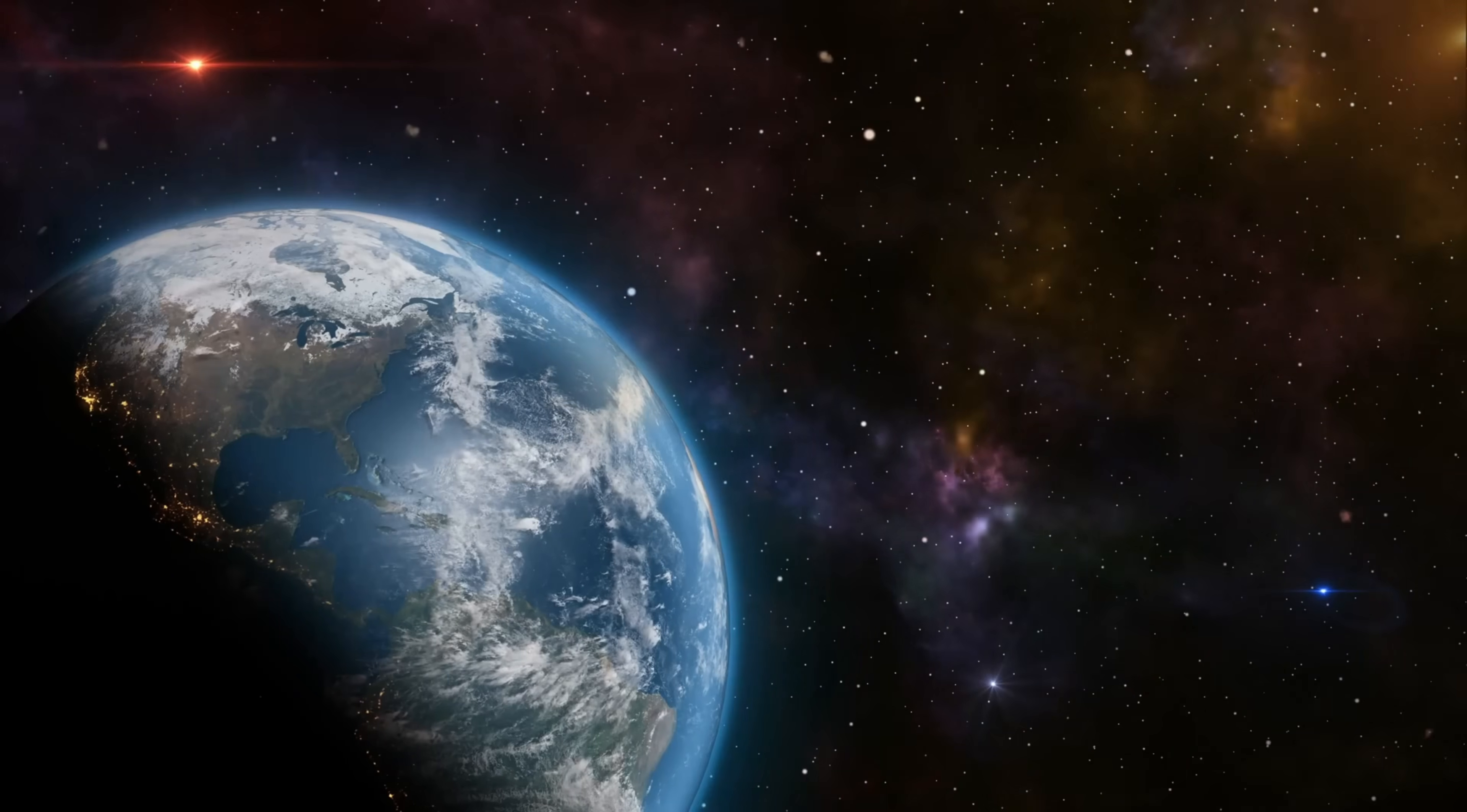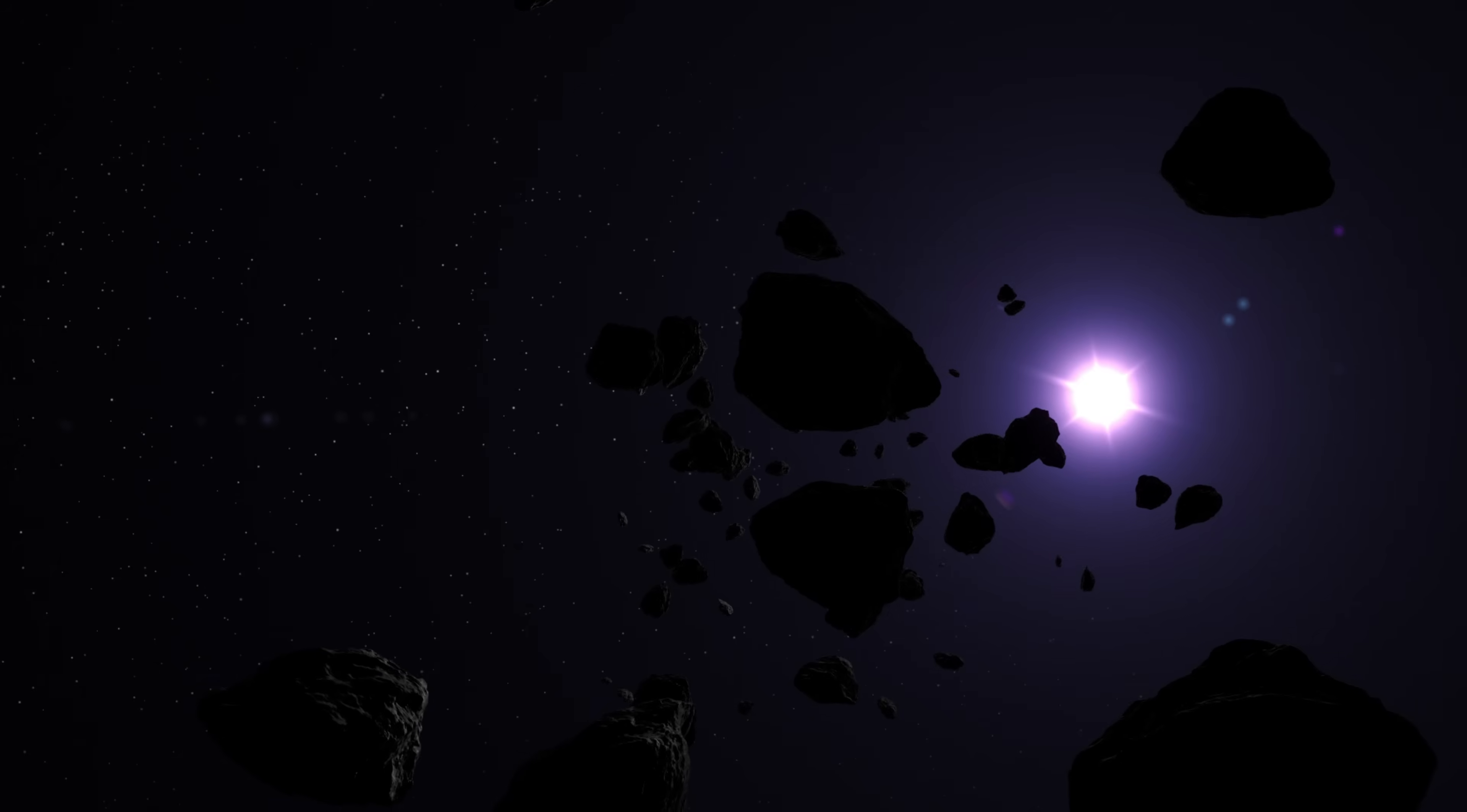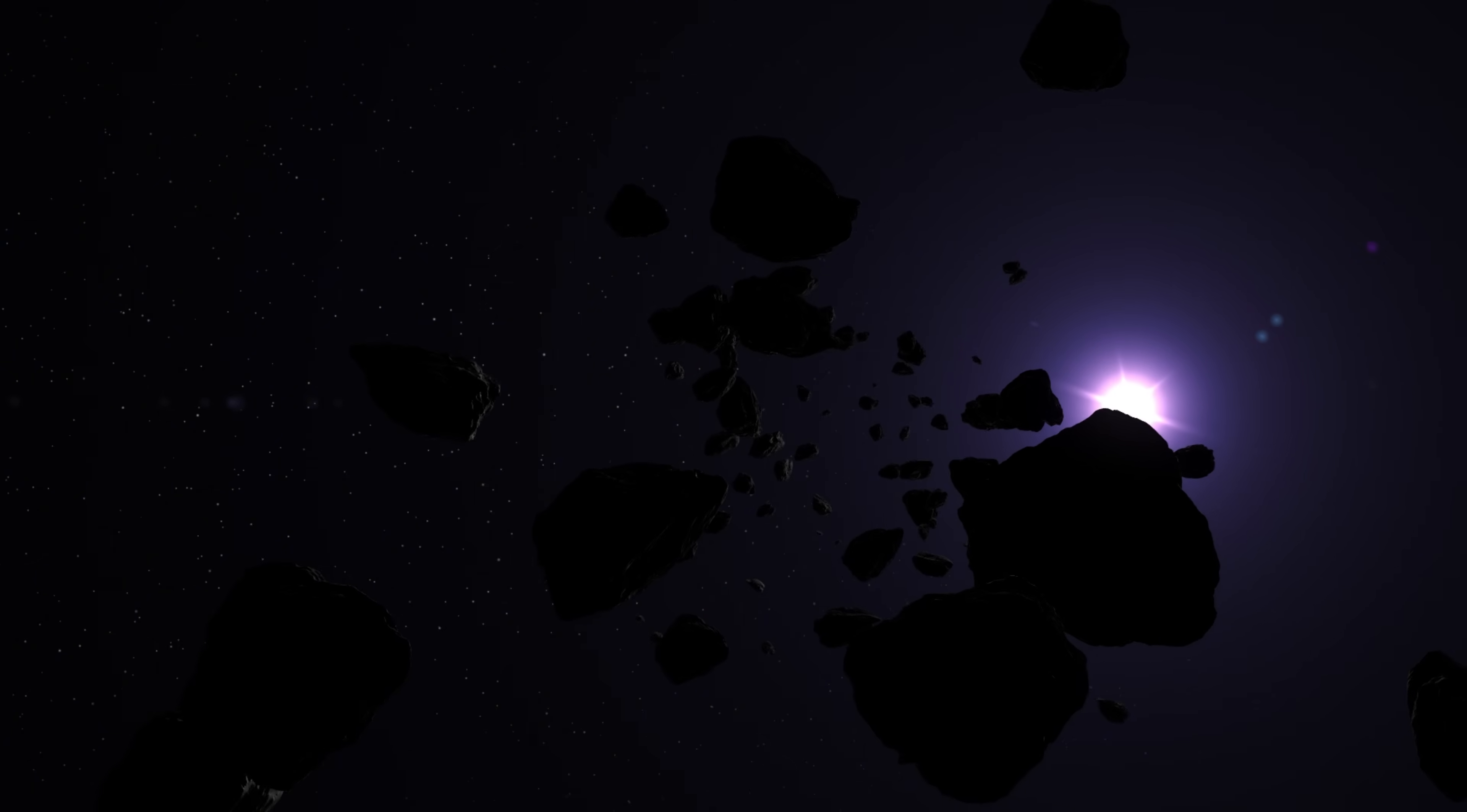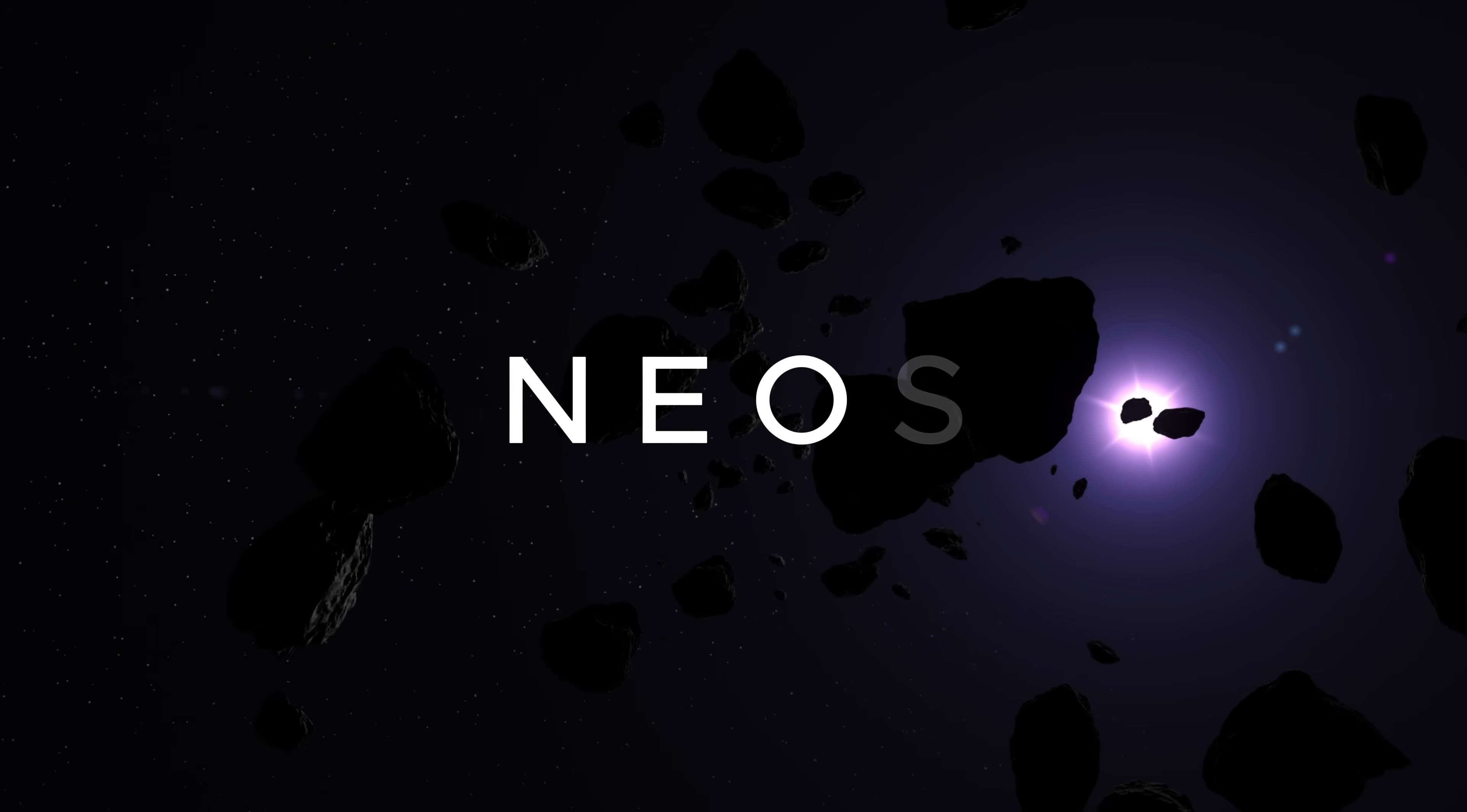Before we talk about the asteroid that nearly ruined everyone's weekend, let's get on the same page. What exactly are these space rocks? And why are they always hanging around Earth's orbit like they own the place? They're called near-Earth objects, or NEOs.